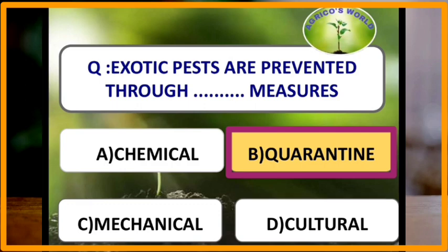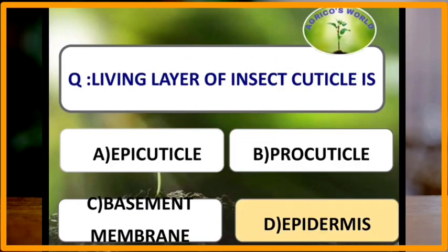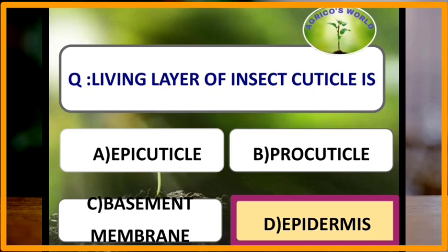The living layer of insect cuticle is epidermis. Insect cuticle consists of three major layers: the basement membrane, the middle epidermis or hypodermis (which consists of dermal glands, trichogen cells, moulting glands, and peristigmatic glands), and the cuticle. Among all these layers, the living layer is the epidermis.